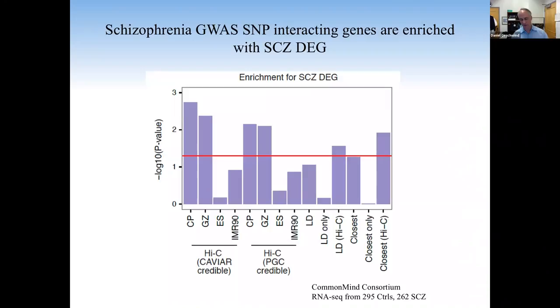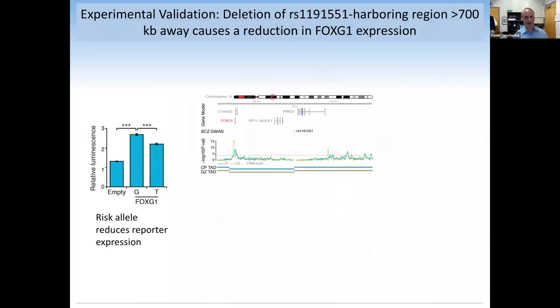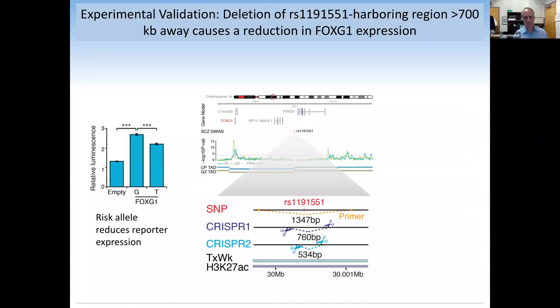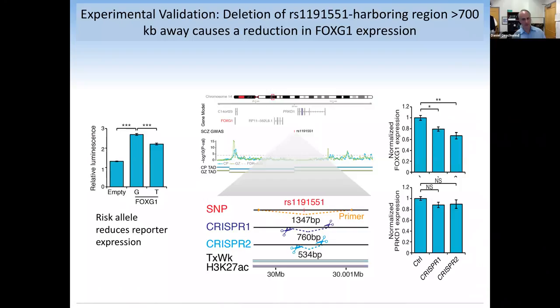One example we validated: a risk SNP region 700 KB away appeared to be interacting with the FOXG1 promoter. We crispered out that region. Before doing so, we did a luciferase reporter assay — the risk allele reduces reporter expression. More importantly, in primary neural progenitors in vitro, two different CRISPR cuts around the proposed enhancer within the Hi-C interaction zone show it affects expression of FOXG1 but not the closest neighboring gene PRKD1. This demonstrates how genomic rearrangements that remove distal enhancers hundreds of KB from the actual gene can be sufficient to cause a disorder.